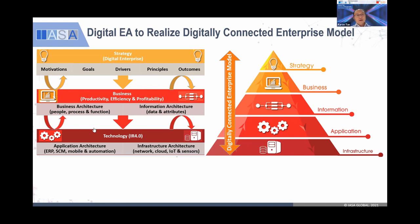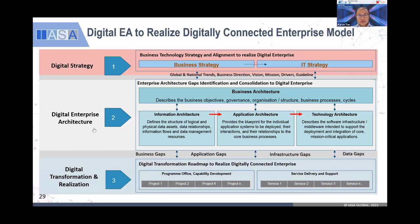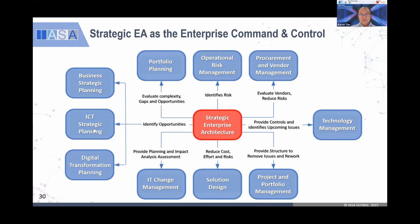From there we can run the transformation and realization journey by running multiple projects. Behind the scenes there is integration between business strategy and IT strategy — that is very important. Then we analyze the architecture gaps in business, information, application, and technology, and how we can fill them. By filling the gaps, we are executing digital transformation. The model is where the EA office performs command and control — it's the center of activity and the focus of all strategy and activity within the enterprise, connecting everything from strategic planning, business, ICT, digital, portfolio risk, and technology management.